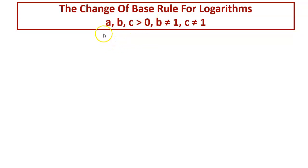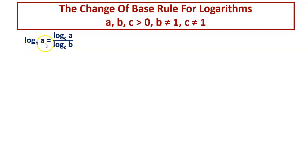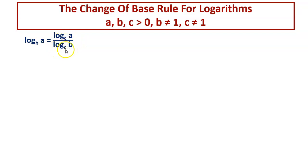First of all, let us know what is the change of base rule. It is log of A to the base B. You are having this logarithmic term to the base B, and if we want to change the base from B to C, this is equal to log of A to the base C over log of B to the base C.